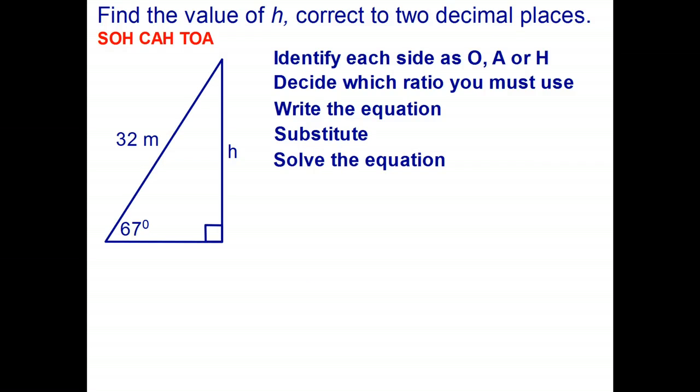Okay now we can go ahead and do the question now that we've learned how to find sine cos and tan using our calculator. So as before we first identify the three sides of the right angle triangle: hypotenuse, opposite, adjacent. As we did before, because we know the hypotenuse we want to find the opposite side, we're going to use the sine ratio. So sine is opposite over hypotenuse. So step one: identify each side as H, O or A. Step two: decide on which ratio you want to use. Step three: write the equation.